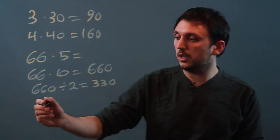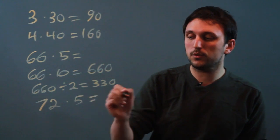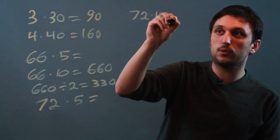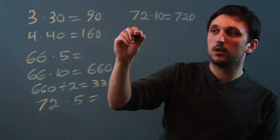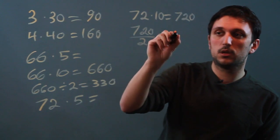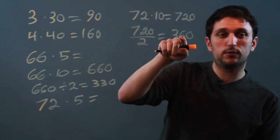We can do this with a number of them. Like 72 times 5 equals, well, 72 times 10 equals 720. 720 divided by 2 equals 360, because 72 divided by 2 is 36.